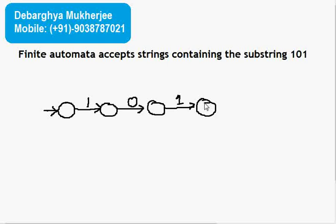This will become my final state. They say that my input string must have 1, 0, 1. Now I can have any number of 0 or 1 at the end, so like the last example I will have 0 comma 1 here.